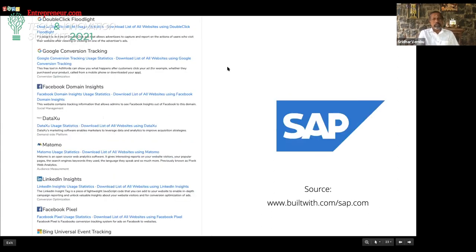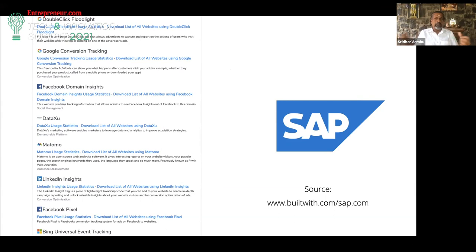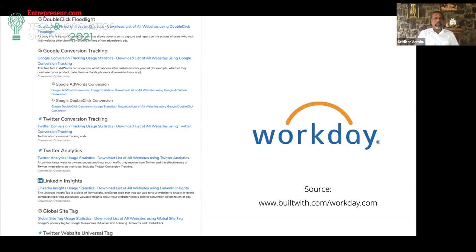There are more examples — SAP is similar. These are business software companies, but look at how many trackers are embedded: LinkedIn, Facebook Pixel, DoubleClick, Google Conversion Tracking — all of it is there. Simply go to the SAP site — Bing and all the trackers are embedded there. The website is festooned with all these ornaments, these trackers. And SAP is actually not even in the ad business — they sell software and subscriptions — yet look at the amount of trackers there.